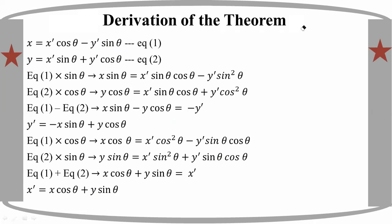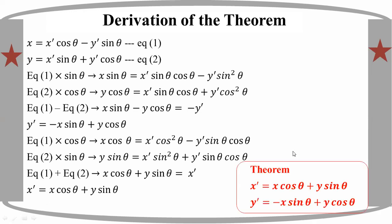In this video, we will see the coordinates of H prime and the new position of H prime. The new position of H prime is the theorem. Let's take a look at H prime and Y prime. H prime equals H cos theta plus Y sin theta. Y prime equals minus H sin theta plus Y cos theta.